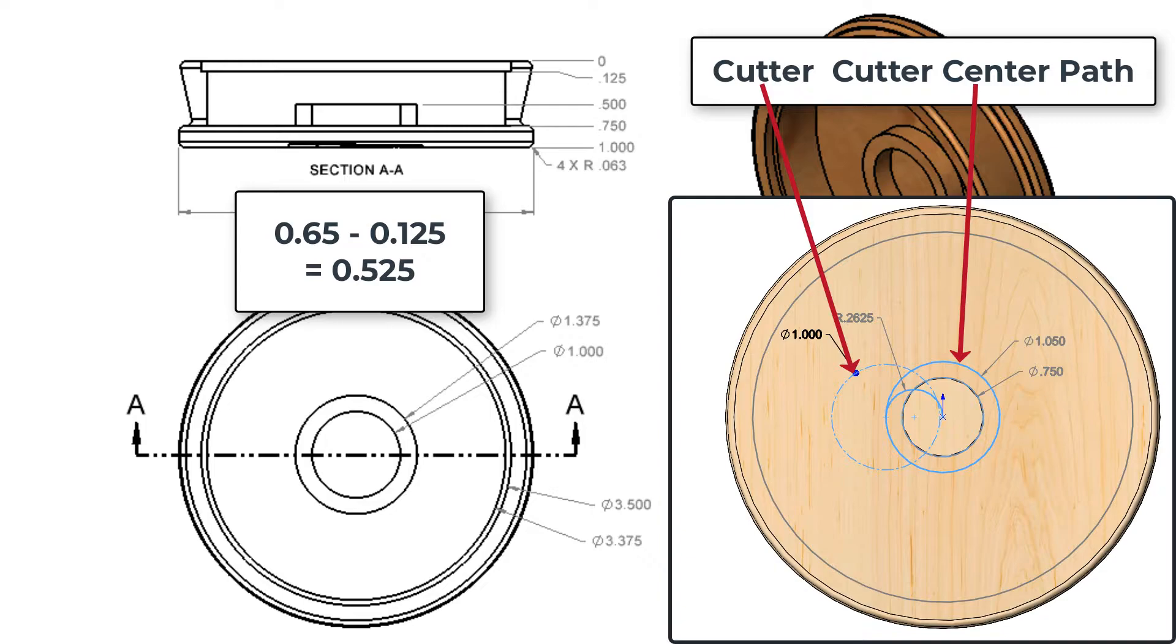For this part I want to program the cutter center. When the cutter plunges down on the center of the part it will open up the 3/4 hole to 1 inch with 1/8 material being removed radially from the hole.